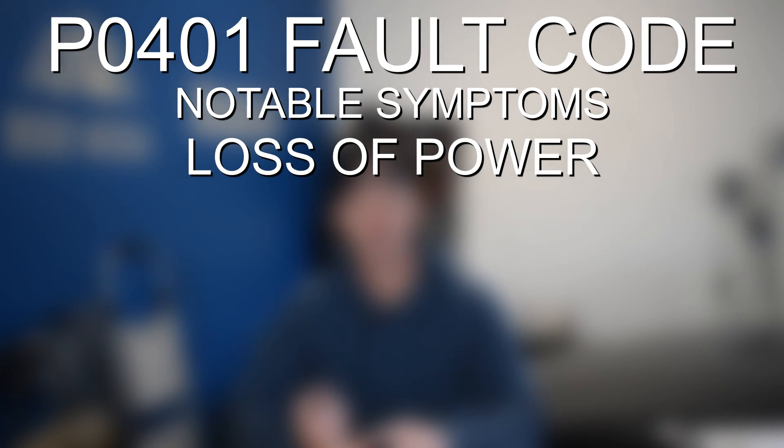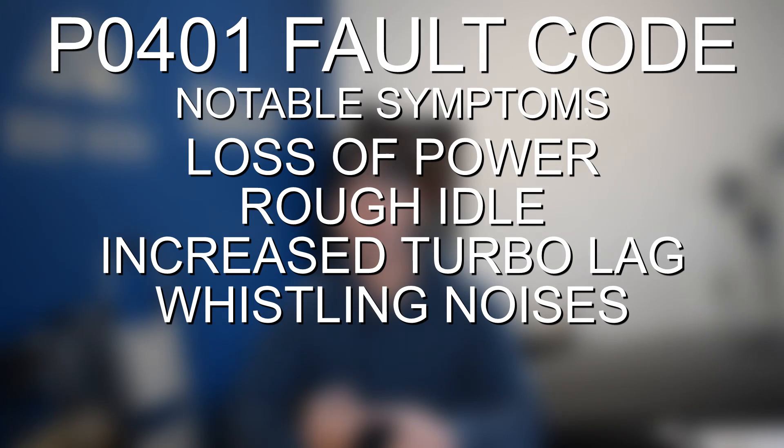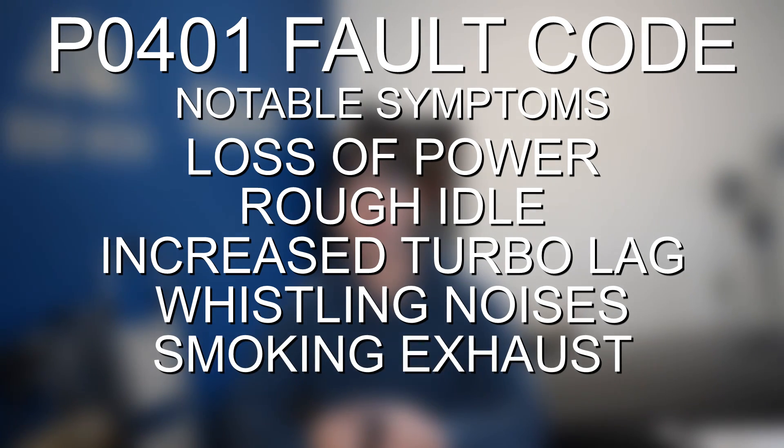Jumping into the symptoms — obviously the first thing you're going to get is a P0401 engine fault code. You're also going to notice a number of other symptoms, and understanding what other symptoms you're getting can help you diagnose the exact problem. A few of those things can be a loss of power or a lack of acceleration, rough idling, increased turbo lag, whistling noises likely coming from the turbocharger, or smoking coming from the tailpipe. Make sure you pay attention to all the other things that are going on.